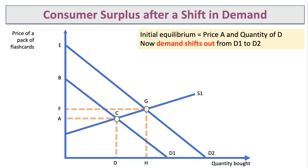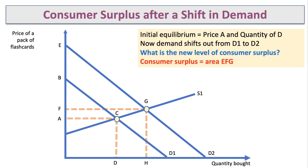The price goes up from A to F and the quantity sold goes up from D to H. The new level of consumer surplus is area EFG, because the price is now F and quantity is H. There are people willing and able to pay more than F for those flashcards — a much bigger area of consumer surplus. So an increase in demand leads to a gain in consumer surplus.